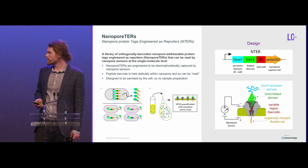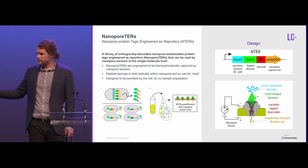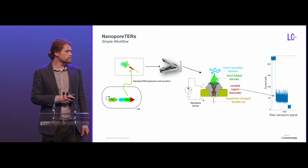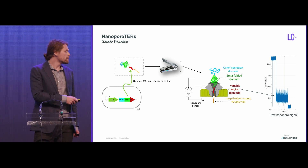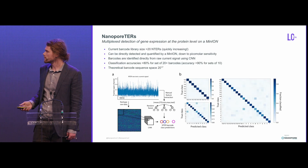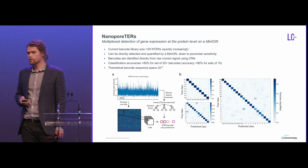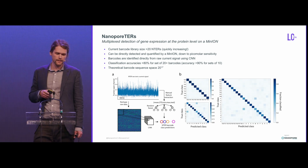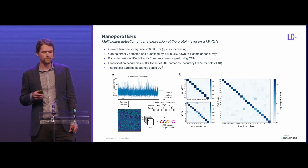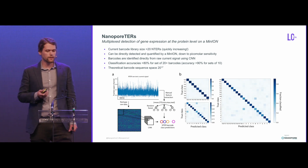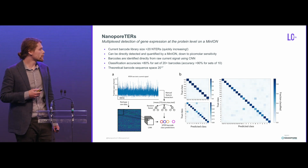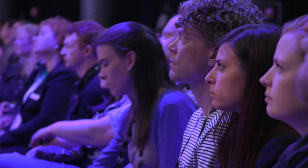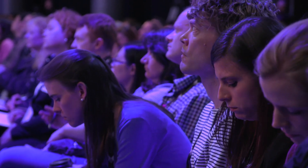We also engineered these to be secreted by cells, so when you're doing an experiment, you can do a direct load of cultures expressing these proteins with no sample prep, and directly load it onto a MinION, to measure these different barcoded reporters. Right now, we have a set of just over 20 orthogonal barcodes that can be directly detected and quantified on a MinION down to picomolar sensitivity, and we are able to directly classify these barcodes using different machine learning methods. Current classification accuracies range from 80 to 90 percent, depending on the set, but the potential barcode sequence space — which we're just beginning to tap into — is 20 to the 17.